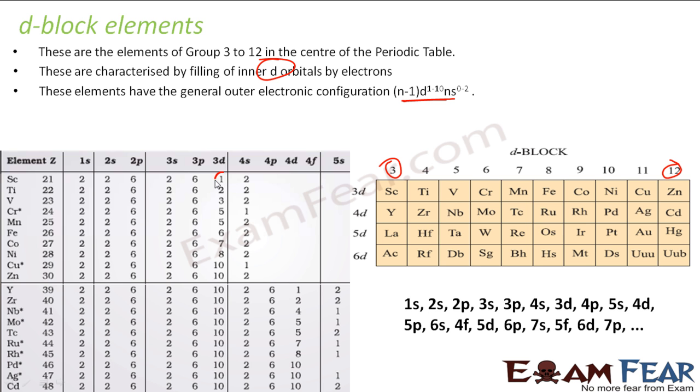If you see the electronic configuration, d has 1 to 10 and then s. Don't get confused with this picture. If you see the order: 1s, then 2s, then 2p, then 3s, then 3p, then 4s, and then 3d. So this is the last orbital actually.